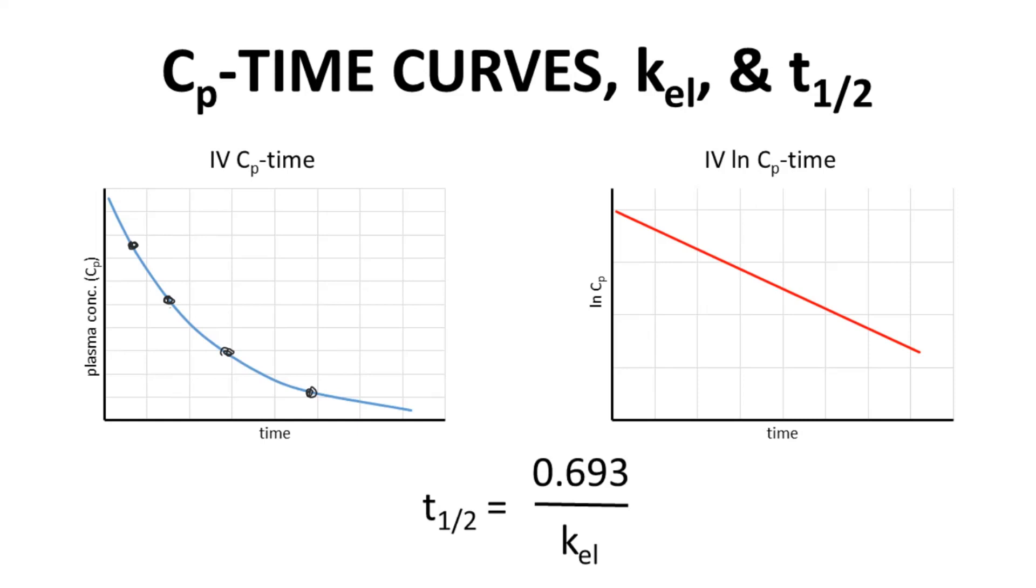We can also visualize these same data points a bit differently. To the right, we have a plot of natural log CP versus time. That is natural log ln base e log instead of base 10 log. Note that we get a line instead of a curve.